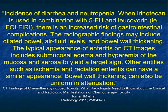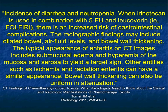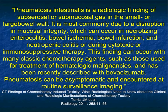Other entities such as ischemia and radiation enteritis can have a similar appearance. It's very important to first detect the pathology, but then it will take some analysis to get the right diagnosis — and at times we won't be perfect, for example if the patient had both chemotherapy and radiation therapy. When we see pneumatosis, we always worry about ischemic or infarcted bowel. Sometimes with chemotherapy, pneumatosis can be asymptomatic and encountered at routine surveillance imaging, so it's important not to have everyone go crazy if you see pneumatosis.